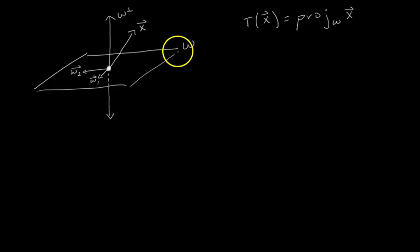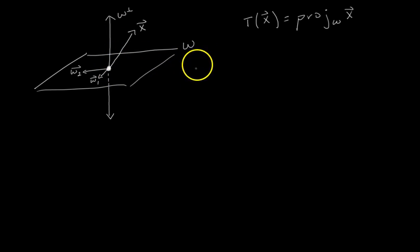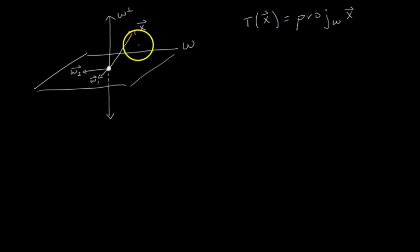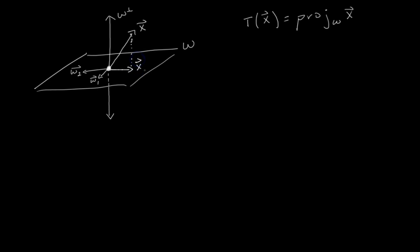We have subspace W, which is just a plane in R3, and we also know from the last video that its orthogonal complement W perp is this line that pierces W at a right angle. The topic of this video is how we can find the standard matrix of the transformation which projects any vector X onto the subspace W. Projections are kind of like the shadow of the vector. If I take this vector X and project it onto W, I get this vector here which is in W — I can call this X sub W.